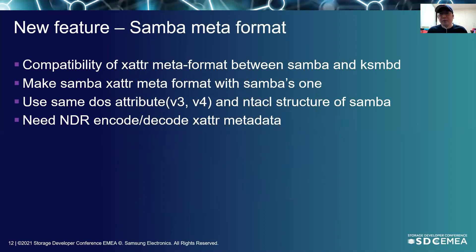The extended-attribute metadata format stored by Samba was not compatible with KSMD. When a user switches from KSMD to Samba, the xattr metadata format is not compatible with existing files in the KSMD share, so incorrect file information can be used. To prevent this, compatibility of xattr metadata information between the two servers is required. Stefan and Jeremy requested making it compatible with Samba. We decided to use the Samba xattr metadata format, specifically the DOS attribute version 3 and version 4 structures and the NT ACL structure defined in the Samba source header.